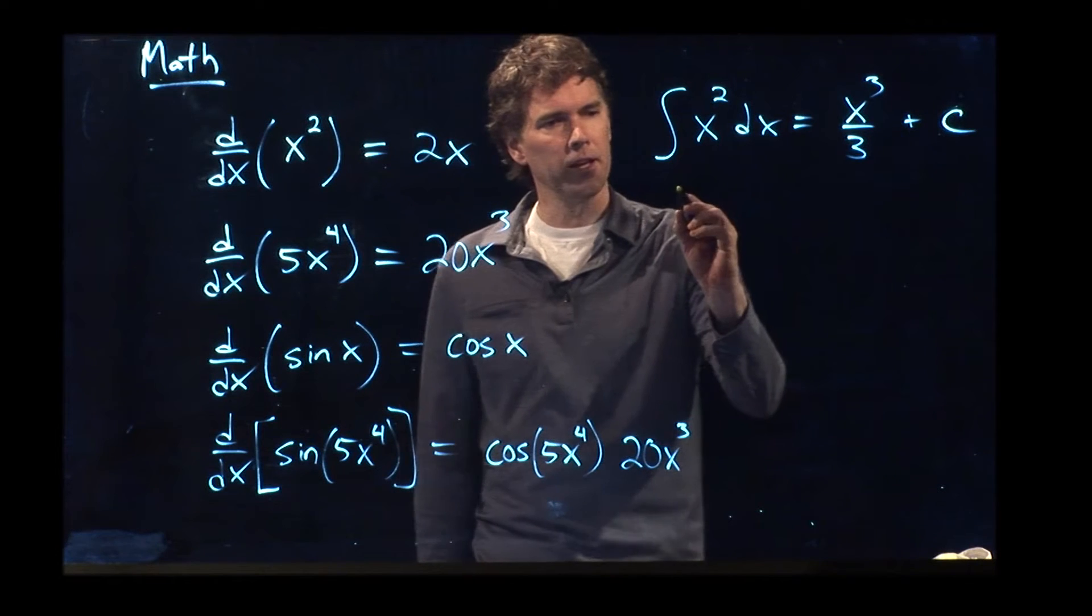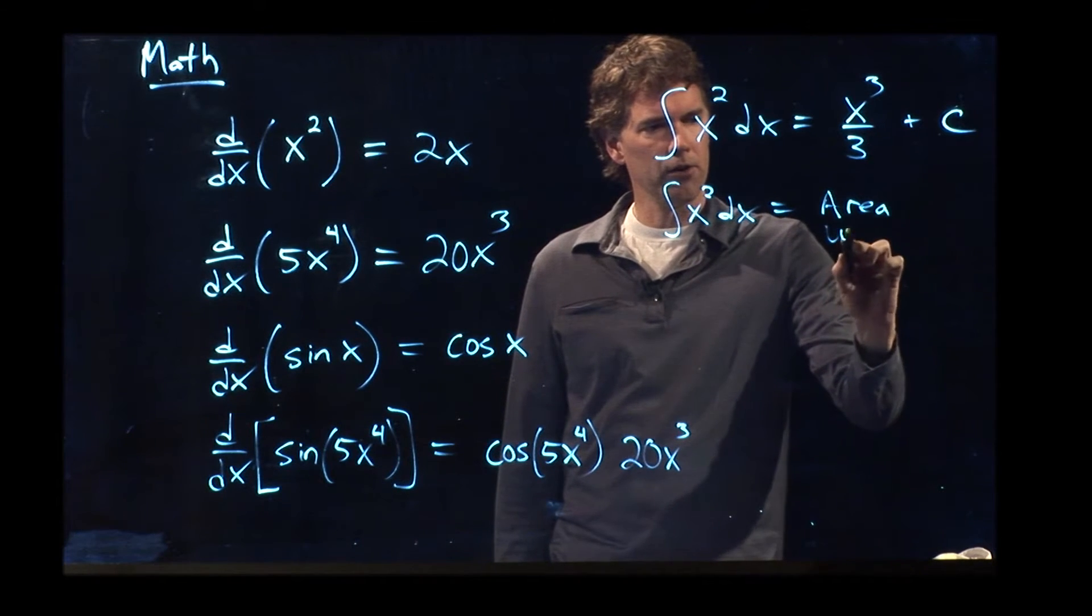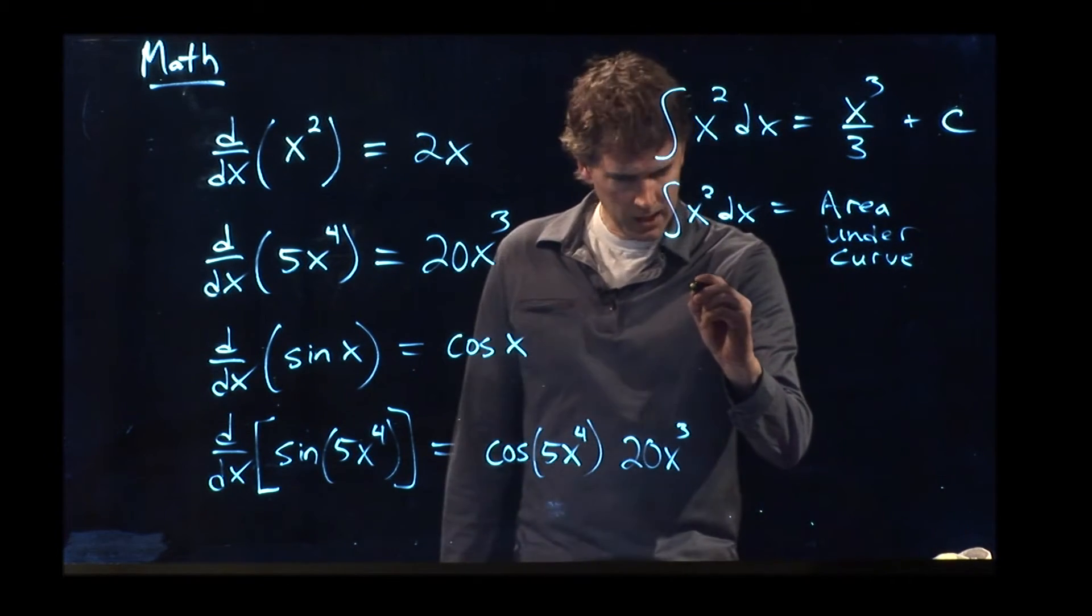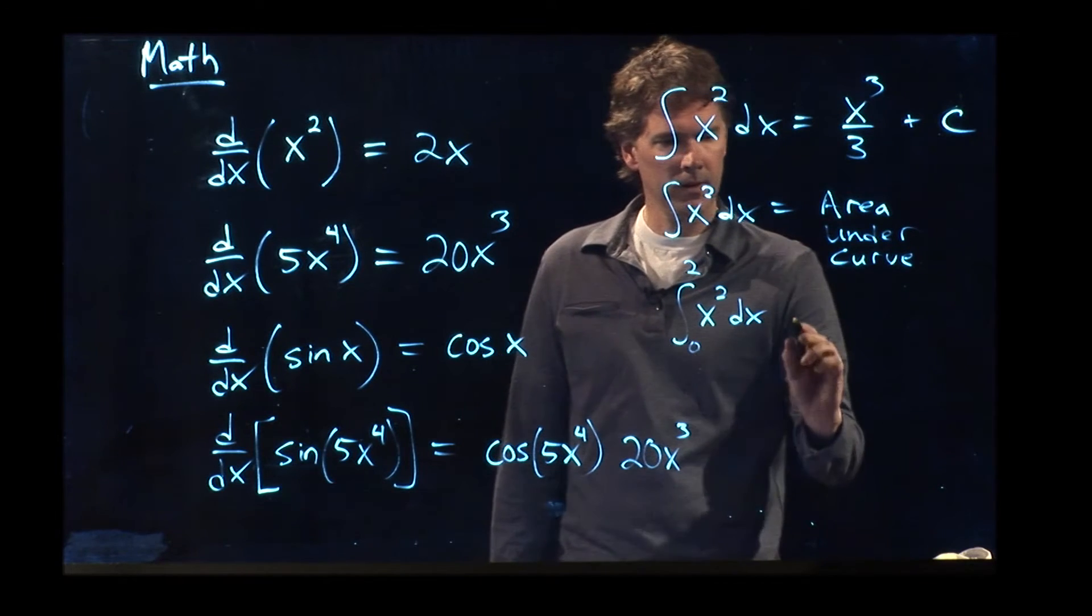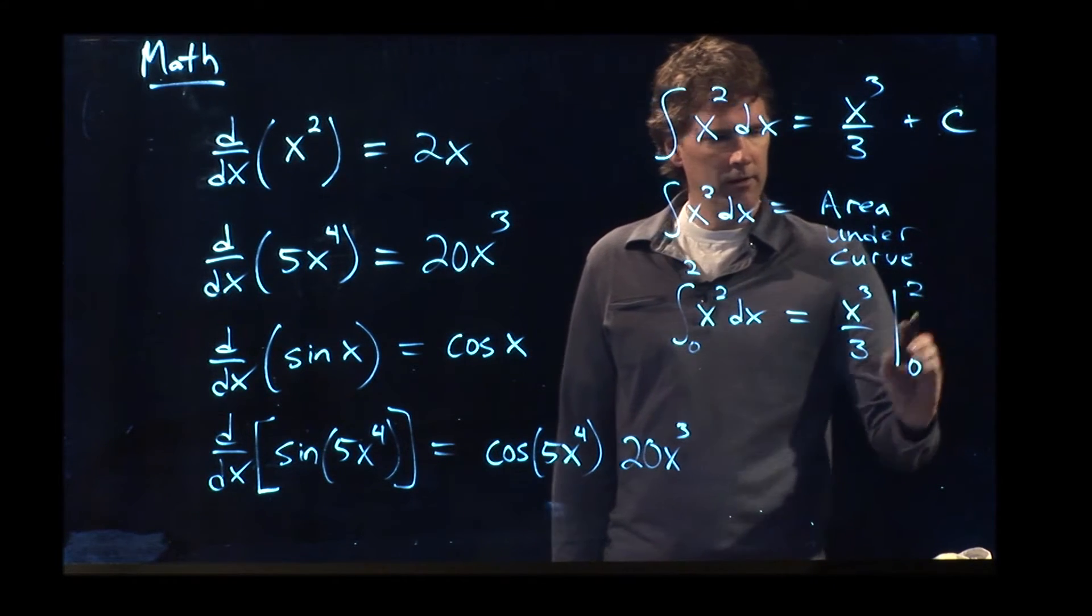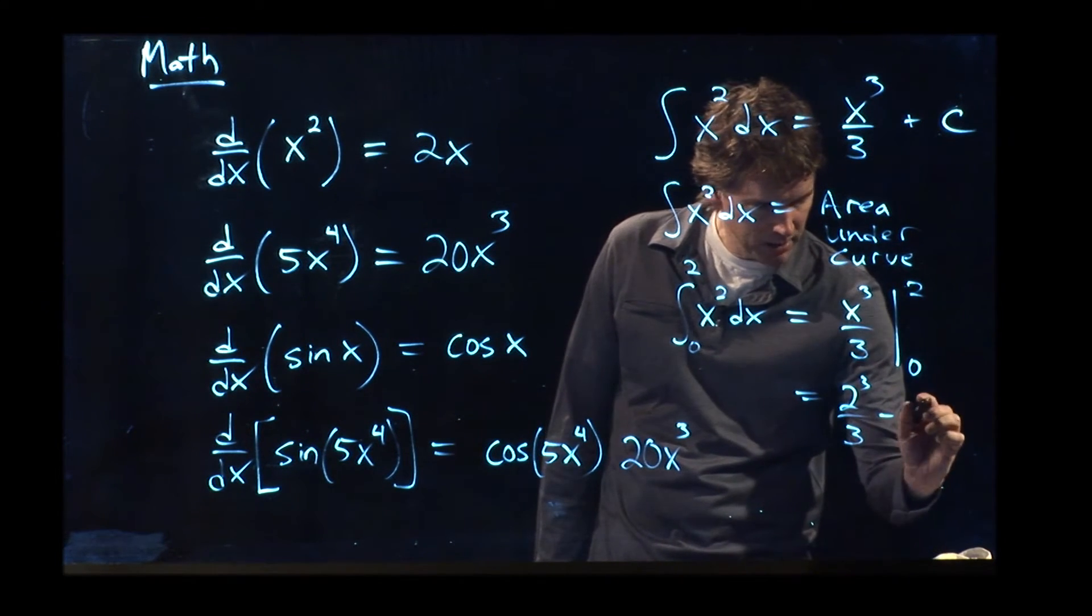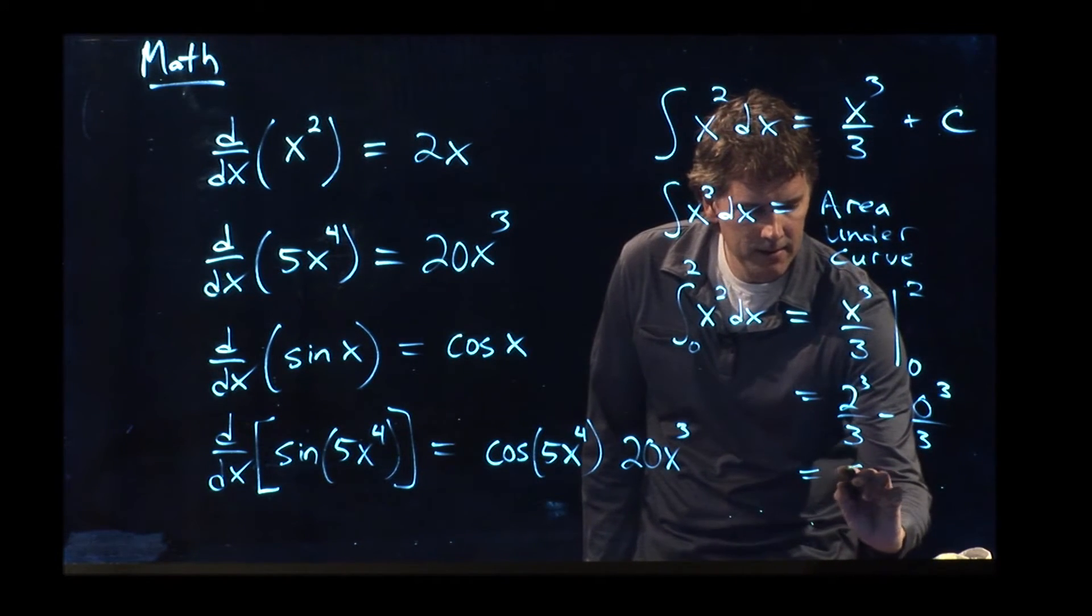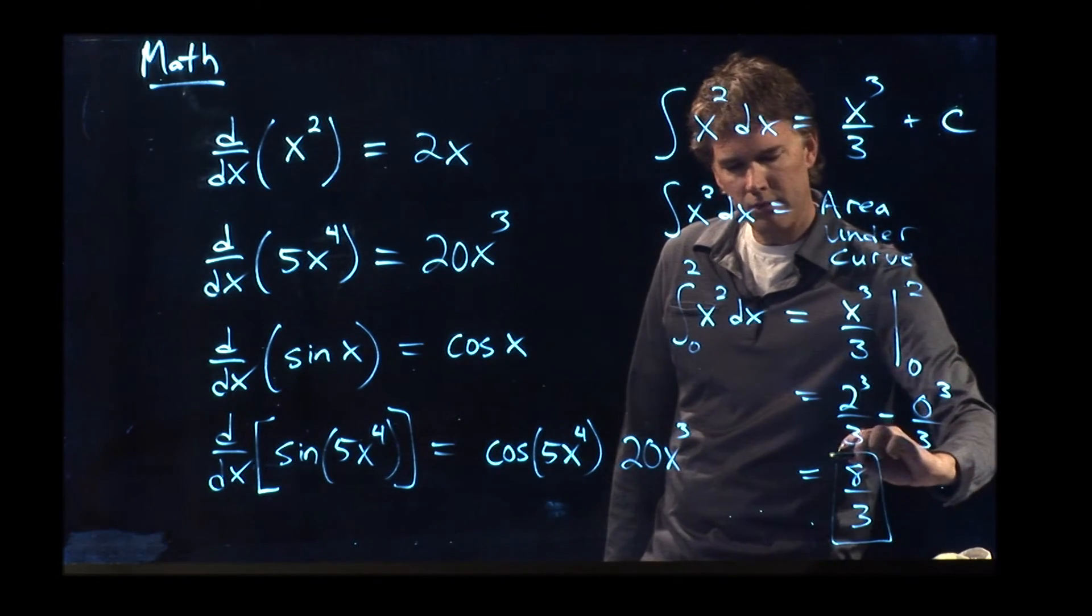But this thing, integral of x squared dx, that is also an area under the curve. So, for instance, if we do the integral of x squared dx, and we go from 0 to 2, what do I get? I get x cubed over 3 evaluated from 0 to 2, which is 2 cubed over 3 minus 0 cubed over 3. 2 cubed is 8. 0 cubed is still 0. And so I get 8 thirds for that value.